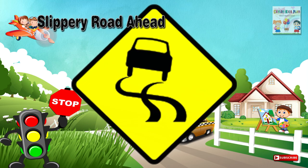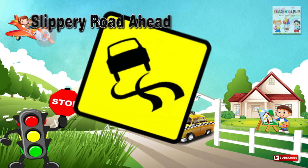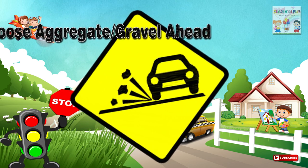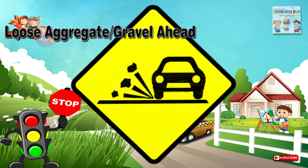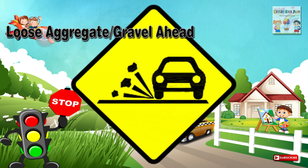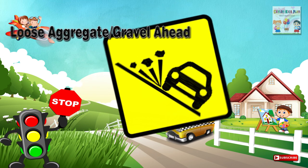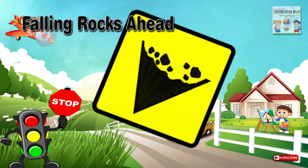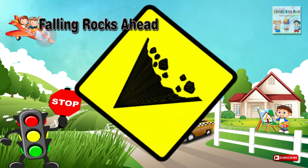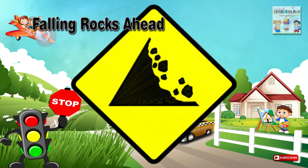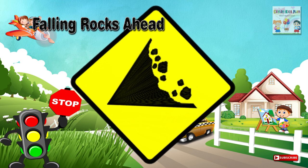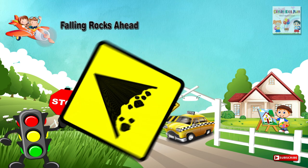Twenty-nine: Slippery road ahead — a place or a section of a road ahead which is slippery and liable for skidding. Thirty: Loose aggregates or gravel ahead — a road section ahead with loose aggregate gravel on the carriageway. Thirty-one: Falling rocks ahead — a place or a section of a road ahead where there is a risk of rocks falling onto the carriageway, or where fallen rocks may lie on the carriageway.